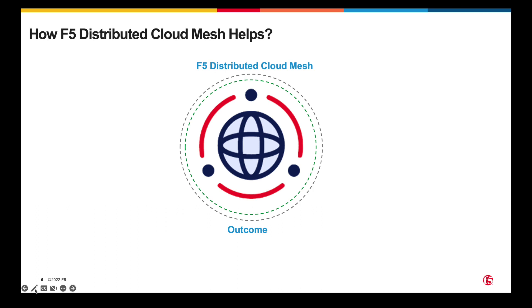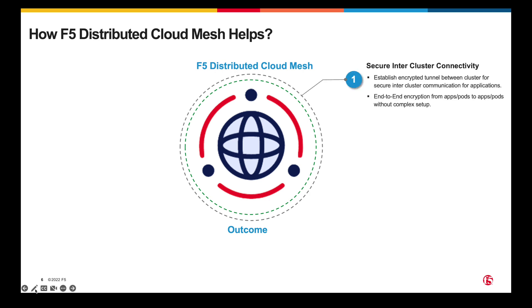How can F5 Distributed Cloud help? F5 Distributed Cloud Mesh — or Cloud Mesh for short — is secured by default. It establishes encrypted tunnels between clusters for inter-cluster application communications, providing end-to-end encryption from app to app without complex setup. It is a software-defined multi-cloud networking solution for Kubernetes.